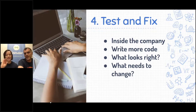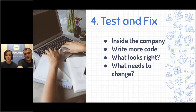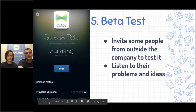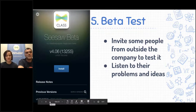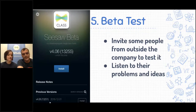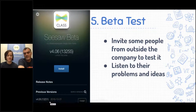Step four — test and fix. Because you have to be so specific when telling a computer what to do, you almost never get it right the first time. Even the best programmers have what we call bugs — things the computer does that you didn't intend. We test at every stage, putting it in front of people inside and outside the company to see what works. Once it's mostly working, we move to beta testing.